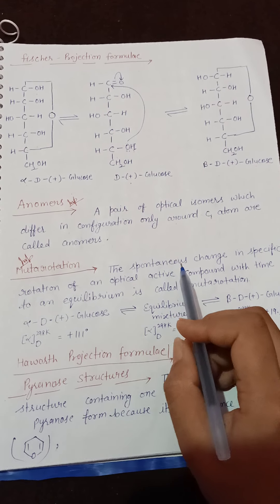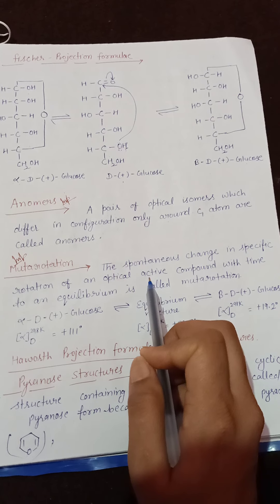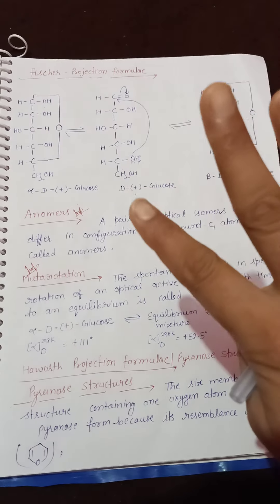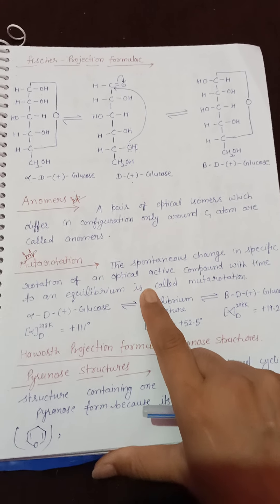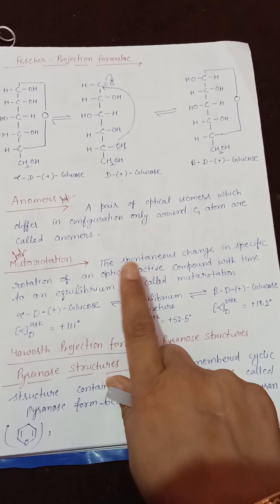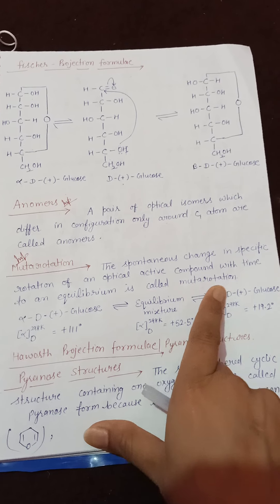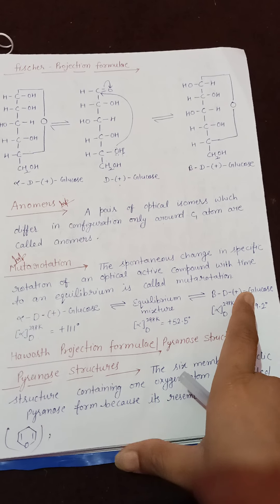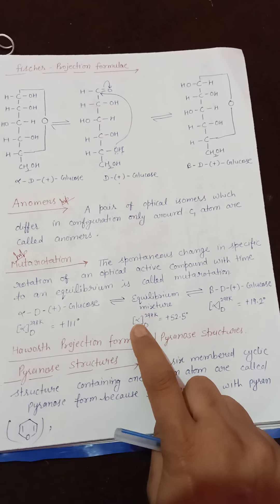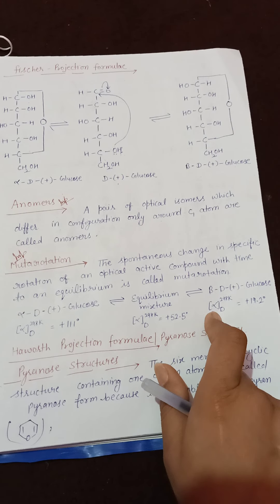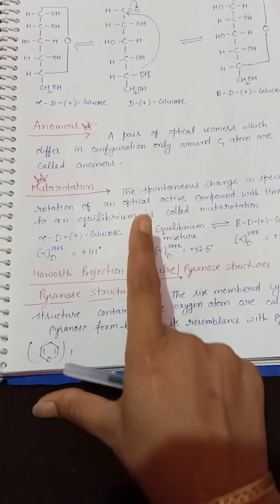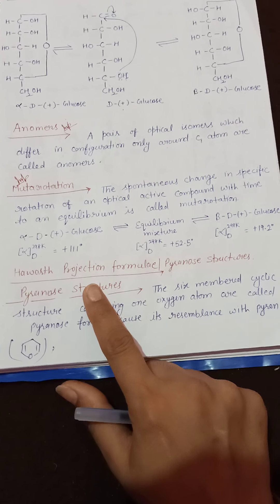Mutarotation is the spontaneous change in specific rotation of an optically active compound with time until equilibrium is reached. Alpha-D-glucose and beta-D-glucose interconvert in solution to form an equilibrium mixture. Alpha-D-glucose has a specific rotation of +111°, beta-D-glucose has +19.2°, and the equilibrium mixture has +52.5°. This spontaneous change in specific rotation is called mutarotation.